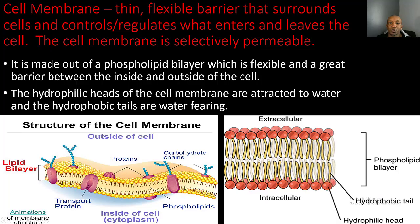Before we get started with active and passive transport, let's talk a little bit about the cell membrane. The cell membrane is a thin flexible barrier that surrounds the cells and controls and regulates what enters and leaves the cell. The cell membrane is also known as being selectively permeable, which means it determines what comes in and out of that cell.